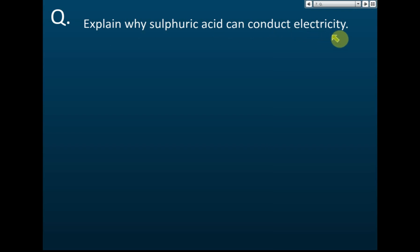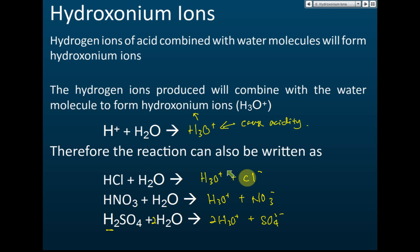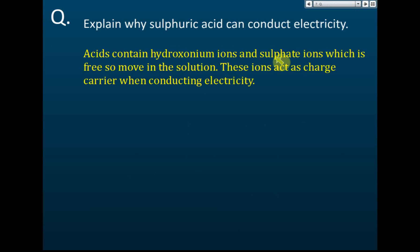Now let's explain why sulfuric acid can conduct electricity. In previous chapters we learned that some liquids or solutions can conduct electricity — these are called electrolytes. Acids and bases are electrolytes, and they can conduct electricity because they have free moving ions. When dissolved in water, they form hydroxonium ions and anions such as chloride ions, which are free to move. Sulfuric acid contains hydroxonium ions and sulfate ions which are free to move in solution.